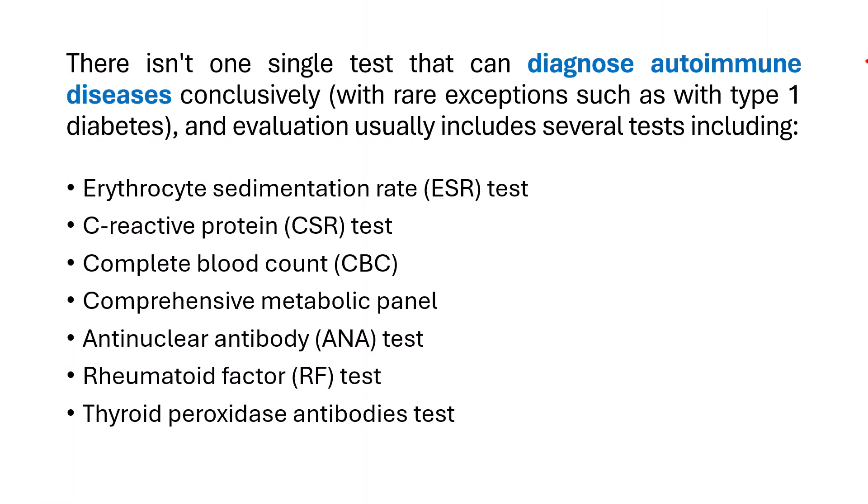There isn't one single test that can diagnose autoimmune diseases — there are many. Some of them include erythrocyte sedimentation rate test, C-reactive protein test, complete blood count, comprehensive metabolic panel, anti-nuclear antibody test, rheumatoid factor test, thyroid peroxidase antibody test, and some imaging studies such as X-rays of affected joints. There are many more tests specified to particular symptoms.